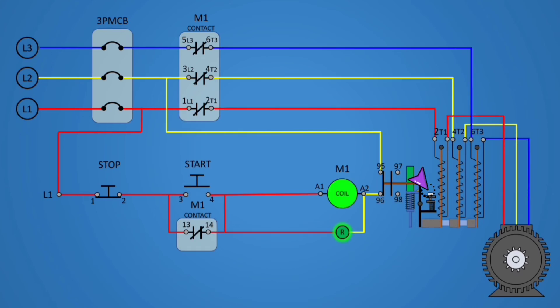The current adjustment screw is used to set the tripping current of the motor. A current range is indicated on the motor's nameplate or by calculating the current protection for the motor.